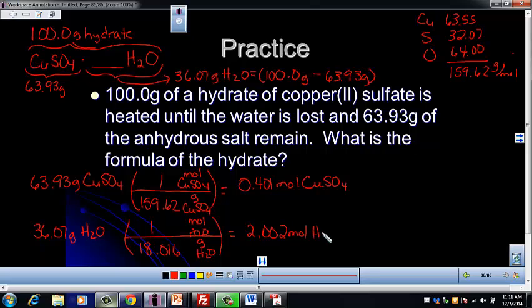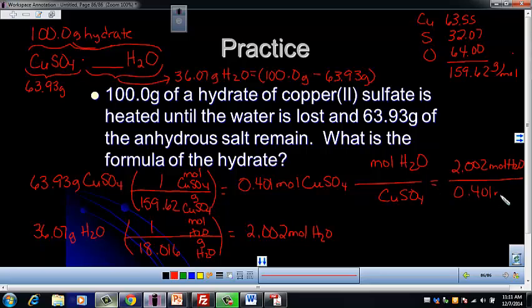So in order to find this number that belongs in this blank, we need to find the ratio of the moles of water to the moles of copper II sulfate. So all we need to do is put those numbers in the little ratio here. And we're going to divide by our 0.401 moles of CuSO4.